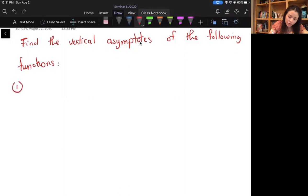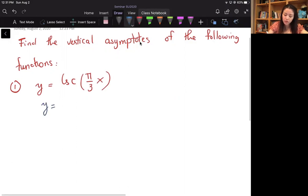So the first one I have y equals cosecant of π over 3x. The first thing I would do is rewrite the cosecant in terms of sine. So this becomes 1 over sine of π over 3x.